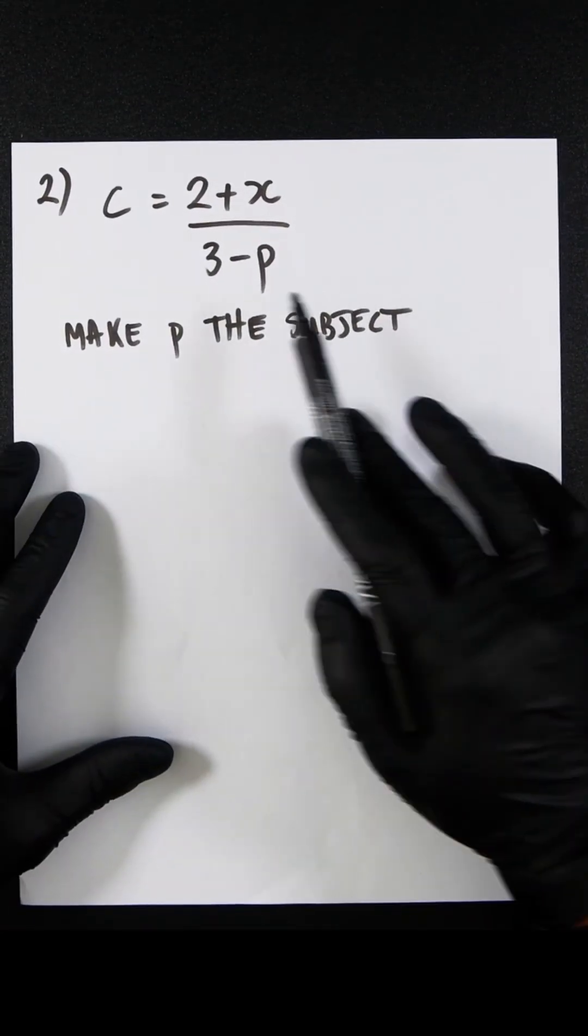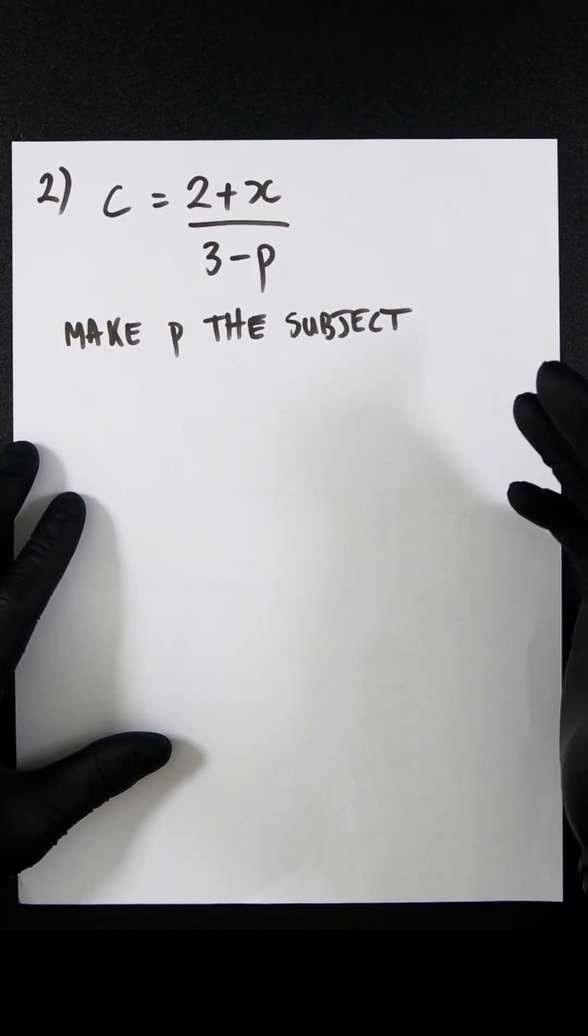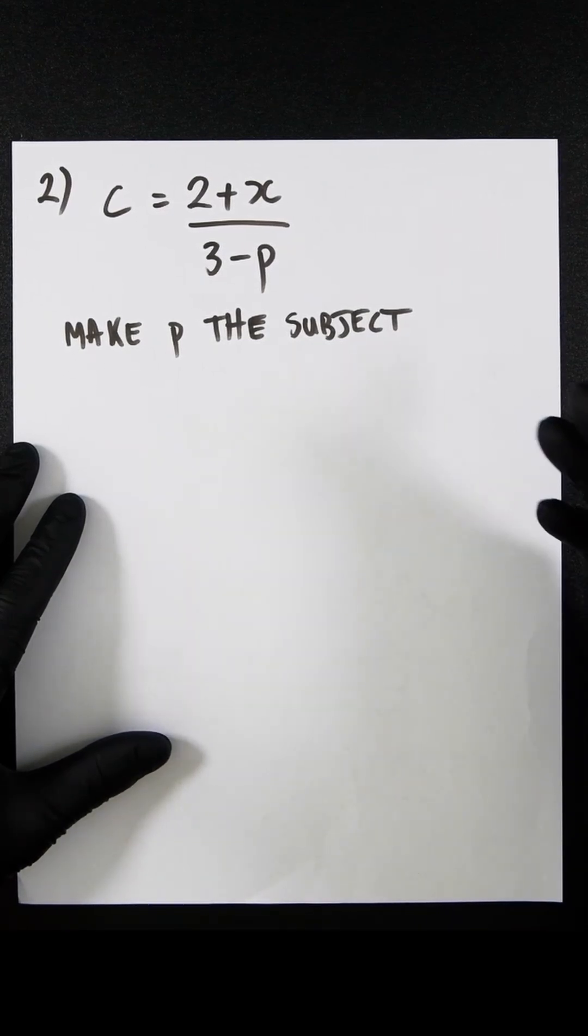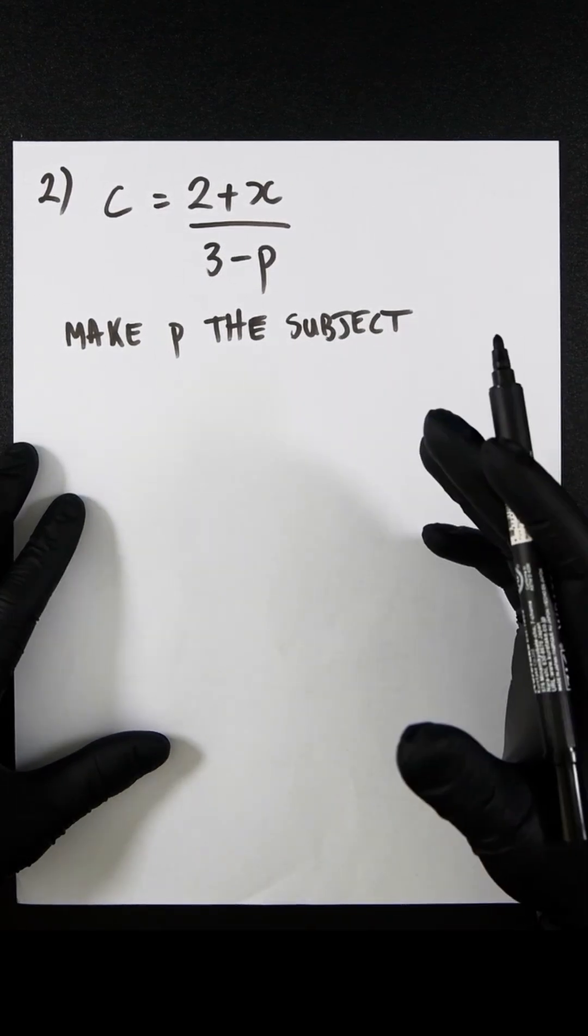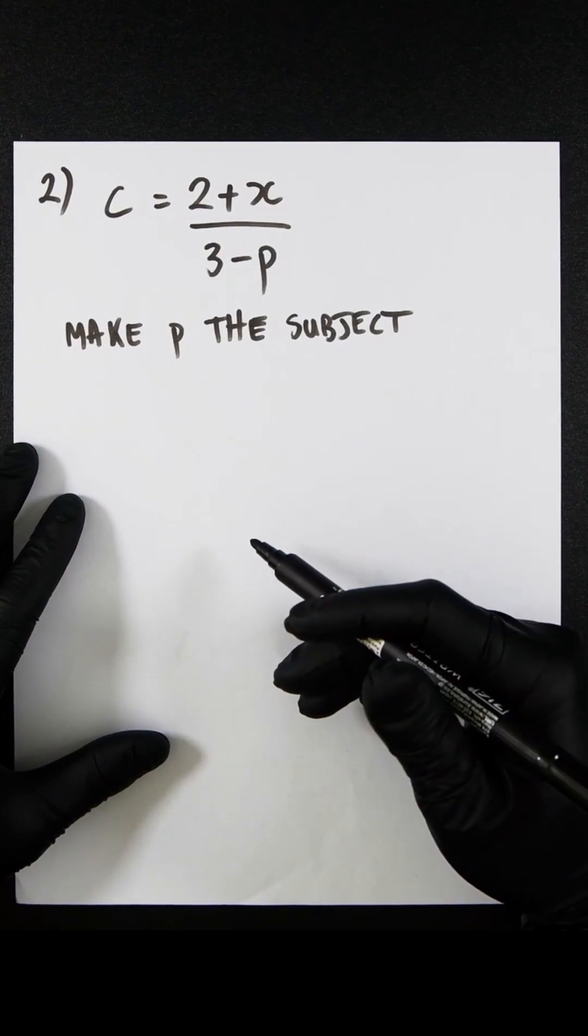In this example, we have a fraction on the right hand side. What I said in the previous example about what is being done on the left hand side must be done on the right hand side is extremely important in this situation.